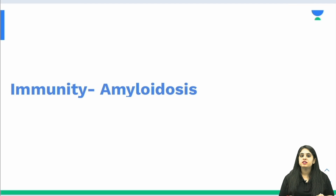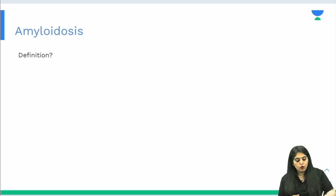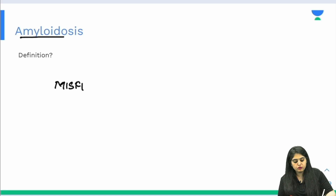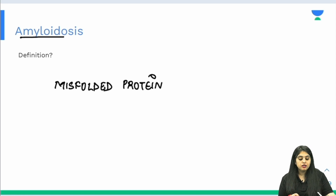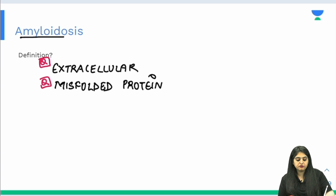The next topic in the immunity chapter is amyloidosis, which is very important for exams — MCQs, one-liners, image-based, and clinical vignettes. In simple terms, amyloid is a protein, but not a regular one — it is a misfolded protein. This protein always accumulates outside the cells. So the keywords are: extracellular, misfolded, proteinaceous substance — that is amyloid.